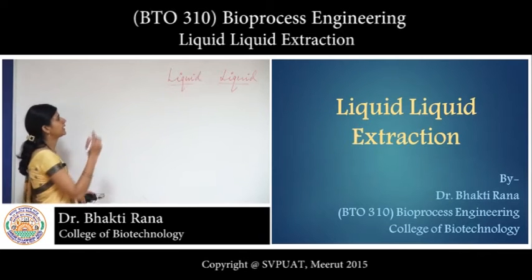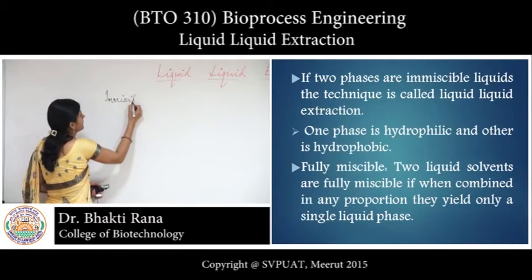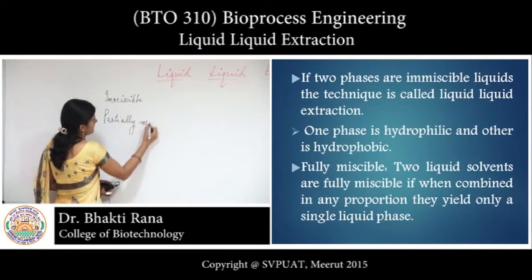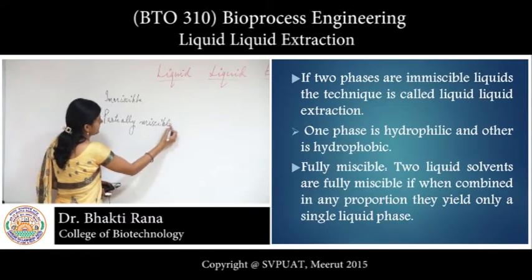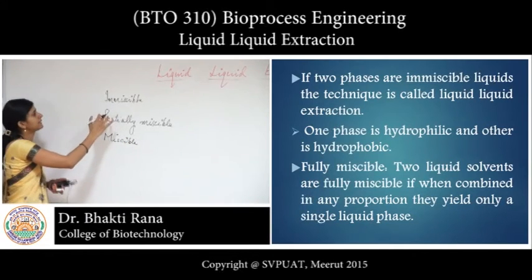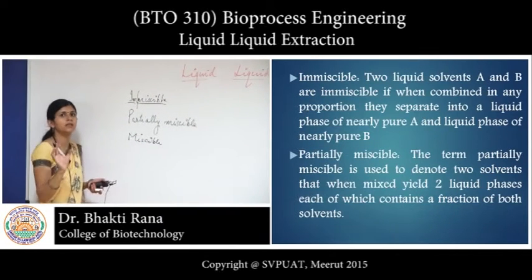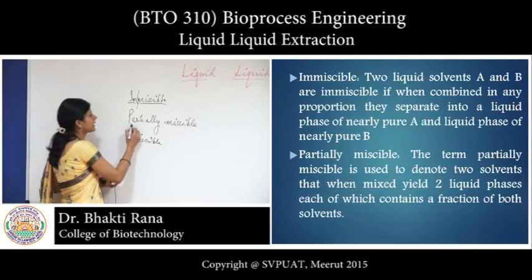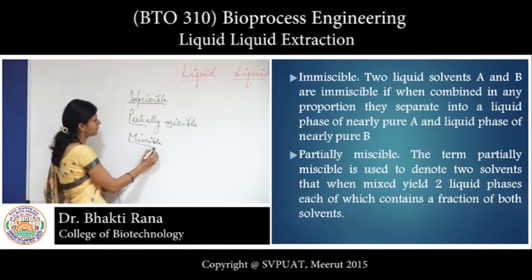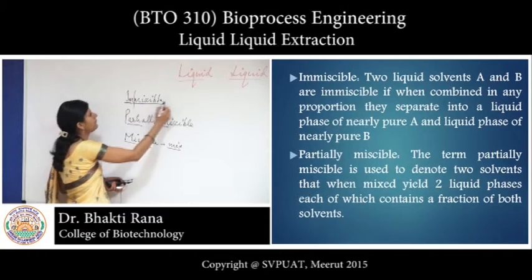There are different types of liquids when you dissolve them. First one is immiscible, then you have partially miscible, then you have miscible. Immiscible means they are not going to dissolve together — both liquids are present but they are not mixing with each other. Partially miscible means some amount is mixed and some is not. Miscible means they are completely mixed, and it is very difficult to separate them. But this technique we are going to use for the immiscible ones.